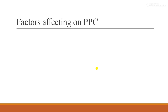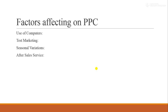Now let us look at the factors affecting PPC. First is the use of computers — in modern times, machines are operated by computers, making this a very big factor. Next is test marketing — the marketing strategy affects PPC. Seasonal variation also plays a role, as different seasons bring different product demands. After-sales services also affect production planning and control.